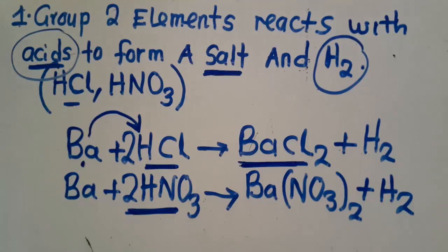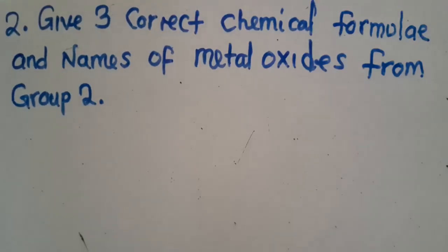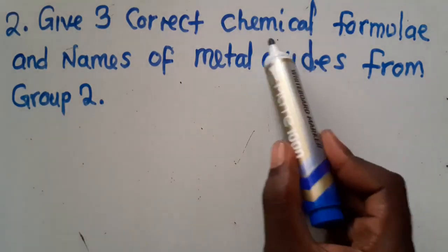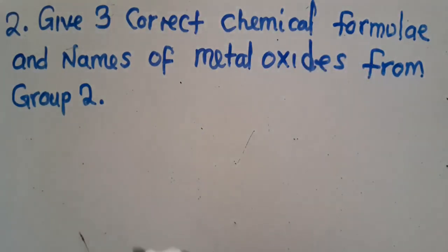Let us look at another question. This question was very simple — I expected everyone to answer it correctly. It was saying: give three correct chemical formulas and names of metal oxides from group 2. This is a property that states that when a group 2 element reacts with oxygen, a metal oxide is formed. The question asked for chemical formulas, not equations.